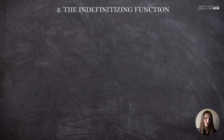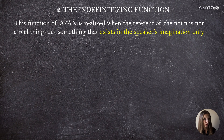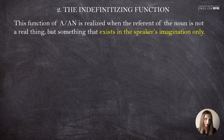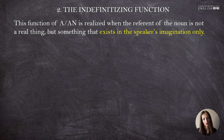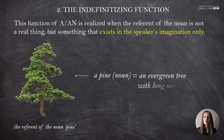The next function is the indefinitizing function. This function is realized when the referent of the noun is not a real thing but something that exists in the speaker's imagination only. The referent is what the noun stands for. For instance, 'pine' — these four letters p-i-n-e — stand for an evergreen tree with long needles. That referent is clear.